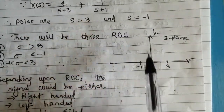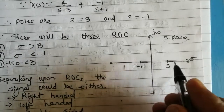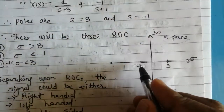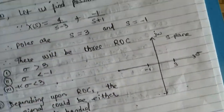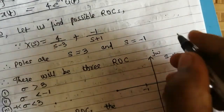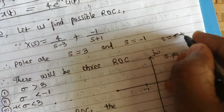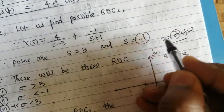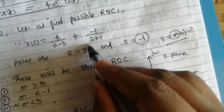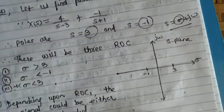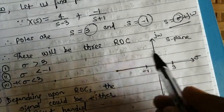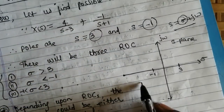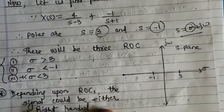Recall that s = σ + jω, so s=-1 means the real part σ=-1, and s=3 means σ=3. That is why on the sigma axis we have drawn s=+3 on the right side and s=-1 on the left side. This is how we draw the S-plane for this problem.